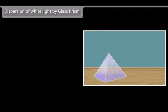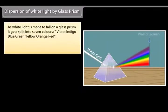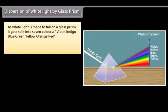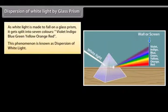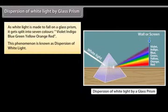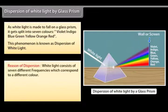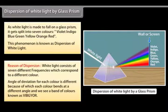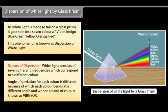Dispersion of white light by a glass prism: When white light is made to fall on a glass prism, it gets split into seven colors — Violet, Indigo, Blue, Green, Yellow, Orange, Red (VIBGYOR). This phenomenon is known as dispersion of white light. White light consists of seven different frequencies corresponding to different colors; the angle of deviation for each color is different, which causes each color to bend at a different angle, producing a band of colors.